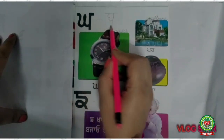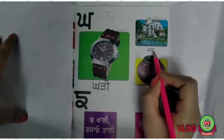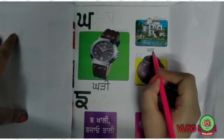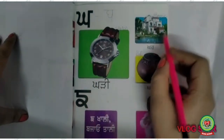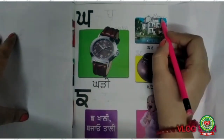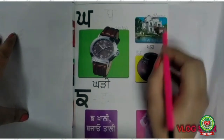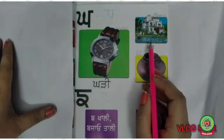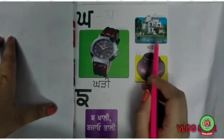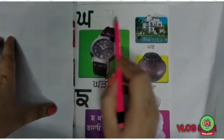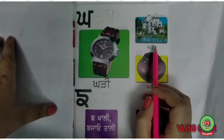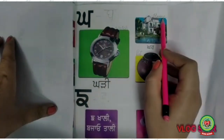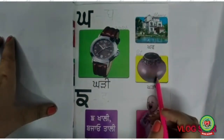Now come to the next picture: kagga gha — 'kar.' Kar means home. Write down 'home': H-O-M-E. Read it once again: kagga gha kadi — kadi means home.